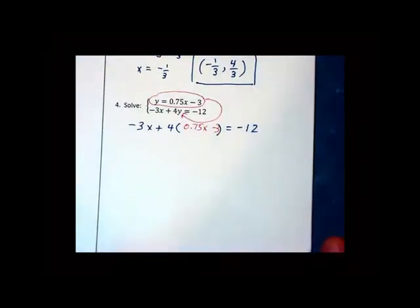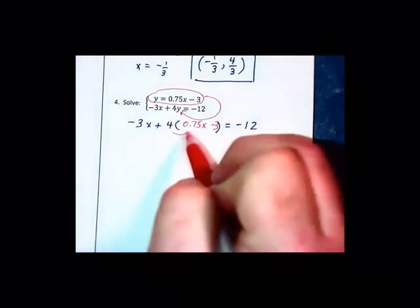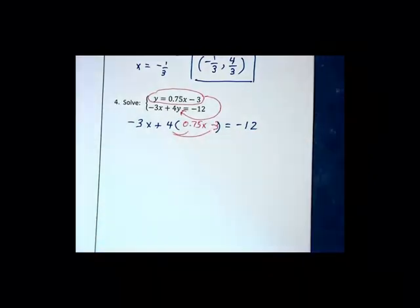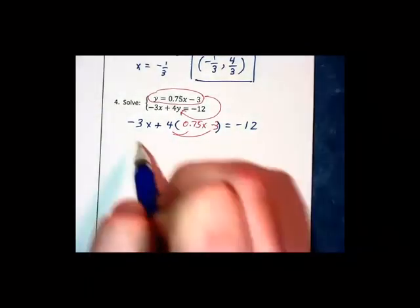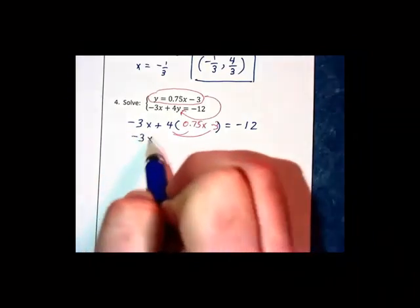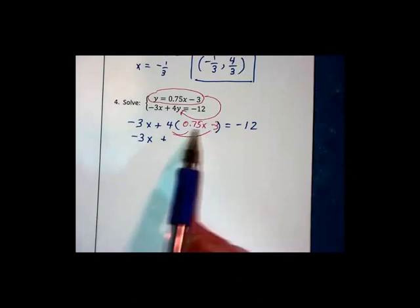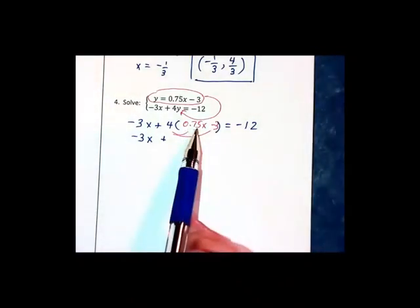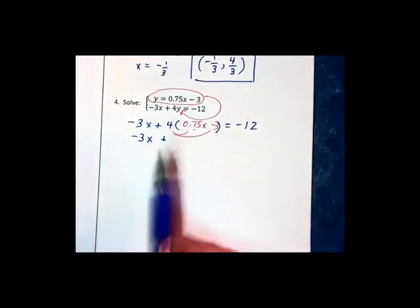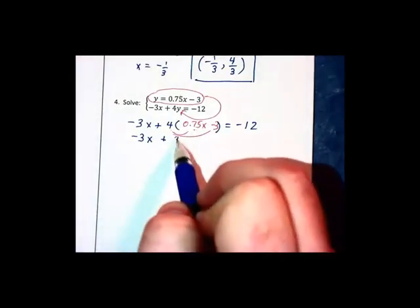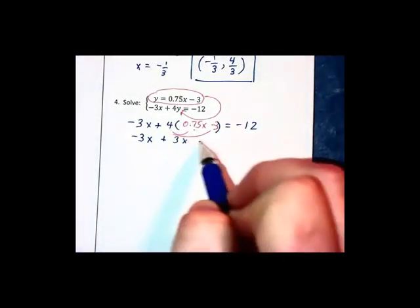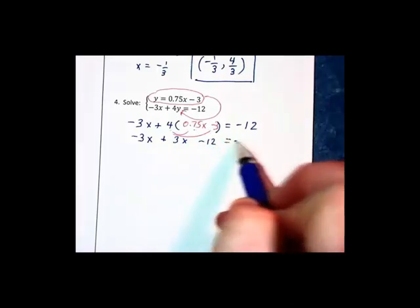Don't let that decimal bug you because it's going to disappear once we distribute. We have negative 3x plus, now 0.75 is really 3 fourths, and when you multiply 3 fourths times 4, the 4s cancel and you just have 3. So 3x minus 12 equals negative 12.